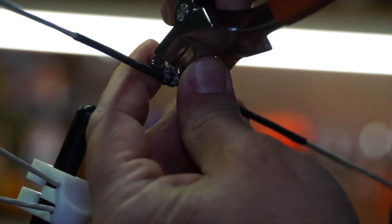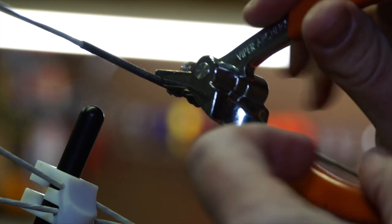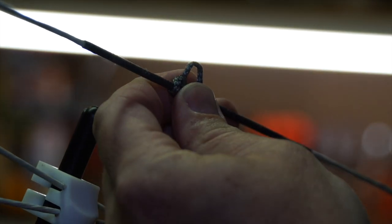I then also will sometimes snug them up further with regular d-loop pliers. You want to be really careful with this. These d-loop pliers will put so much pressure on it you'll actually separate the servings on your string.